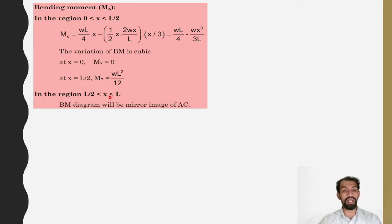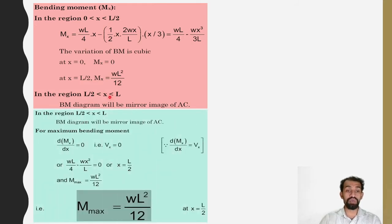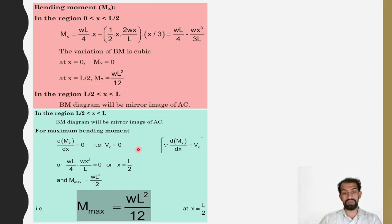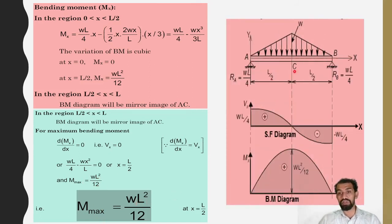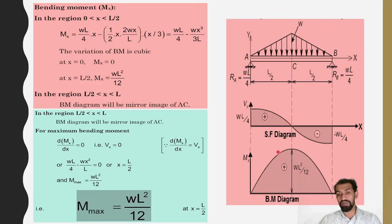In region L by 2 to L, the bending moment diagram is the mirror image of A to C. For maximum bending moment, differentiating Mx and setting to zero gives Vx equals 0, i.e., W·L by 4 minus w·x² by L equals 0. The maximum bending moment is W·L² by 12, and the SFD is parabolic while the BMD is cubic.